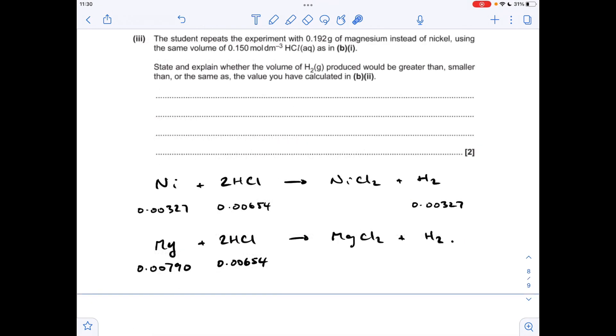So moving on to the last part of the question which I think is quite tricky to be honest. So there's just a summary of what we know so far. So we've used that many moles of nickel, it needed exactly that many moles of HCl, and it made that many moles of hydrogen.